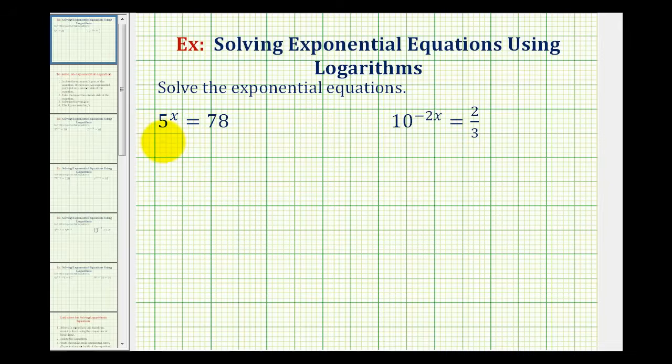Notice 5 to the power of x is already isolated on the left side of the equation. So for this example, we'll take the natural log of both sides of the equation. We'd have the natural log of 5 raised to the power of x equals the natural log of 78.